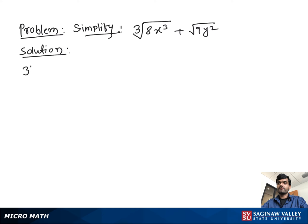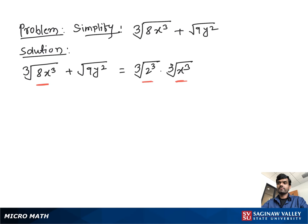Simplify cube root of 8x³ plus square root of 9y². First we simplify 8x³ as cube root of 2³, which is 8, times cube root of x³, plus square root of 9.